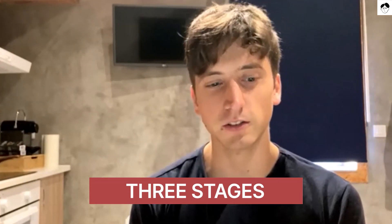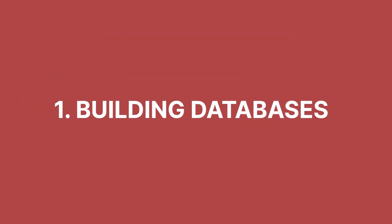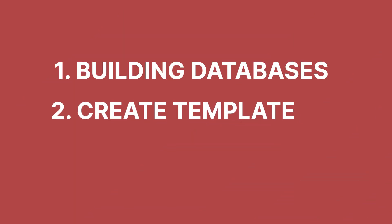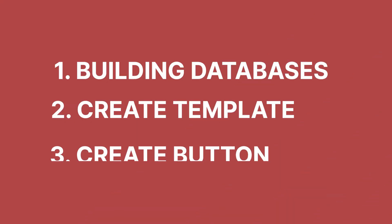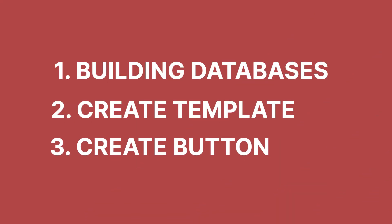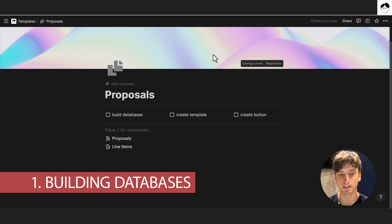There are three stages in this video. The first stage is building databases — laying out the structure of the two key databases that power the system. In the second step, we'll create a template for proposals where you can see all the line items. And finally, we'll create a button so that with a simple click, you can create a new proposal with all default line items within Notion.